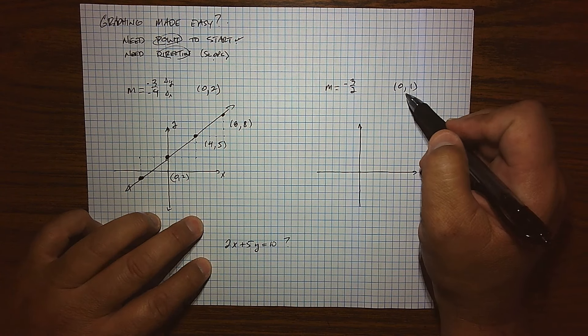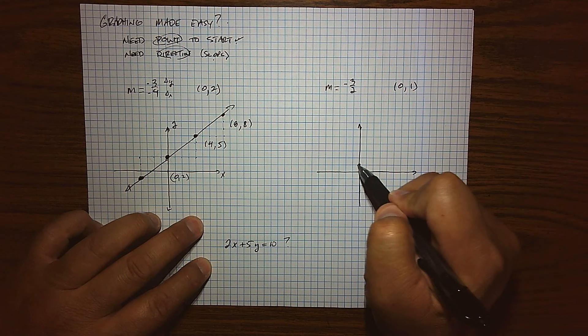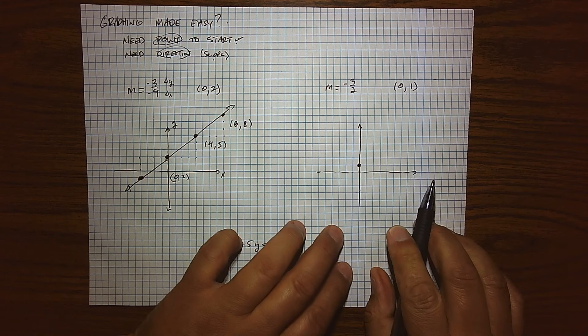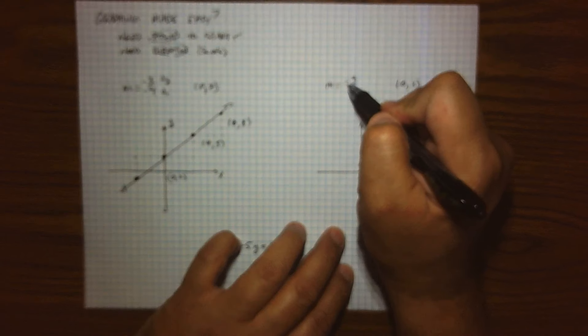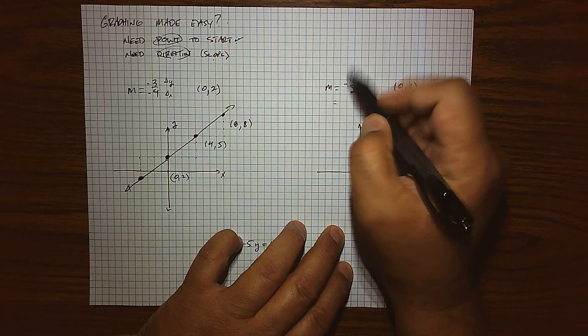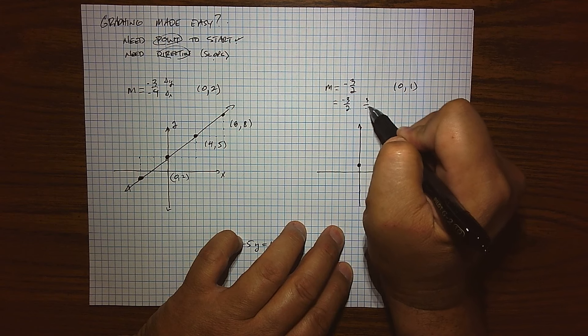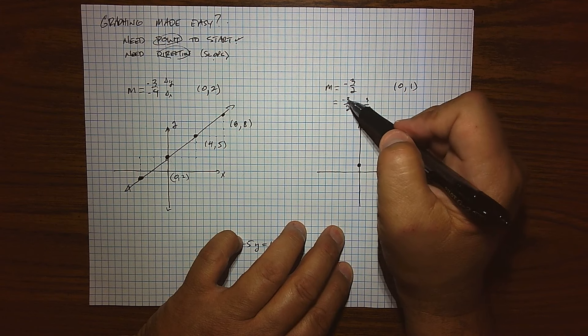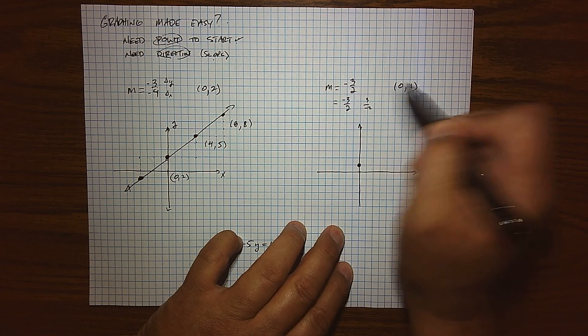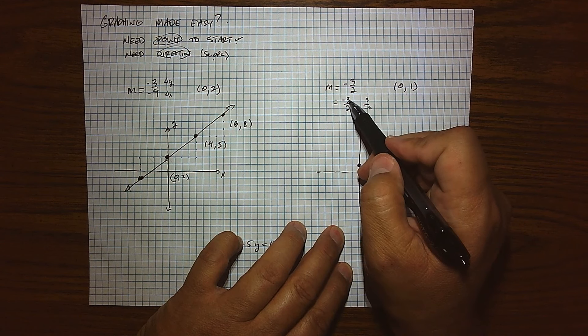And then the next example, we're starting at a location of (0, 1). So there's my information. And then my slope, you've got to be careful with that negative. As we've seen in other videos, there's two locations where you can put that negative, upstairs or down below. And that's going to be huge when we talk about slope. So what's my change in Y?